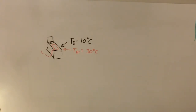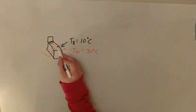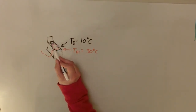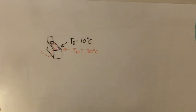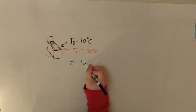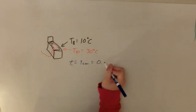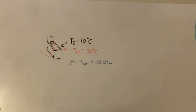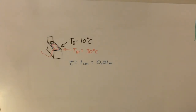The blanket is on top of a thin sheet that is on top of the bed, so the heat has to go through that sheet and into the bed. The sheet has a thickness of about 1 centimeter, which equals 0.01 meters. Never hurts to use SI units.